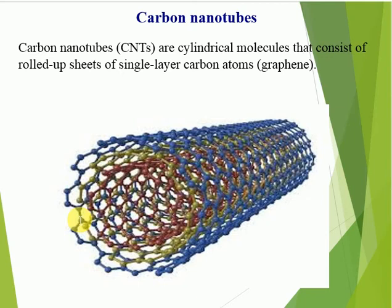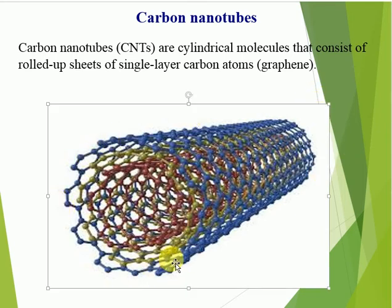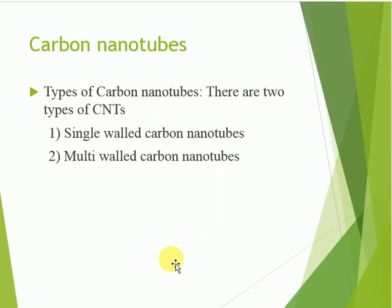The next topic is carbon nanotubes (CNTs). Carbon nanotubes are cylindrical molecules that consist of rolled-up sheets of a single layer of carbon atoms — that is, graphene. Carbon atoms are arranged hexagonally in a cylinder shape. There are two types: first, single-wall carbon nanotubes (SWCNT), which have a single outer wall of carbon; second, multi-wall carbon nanotubes (MWCNT), which contain multiple outer walls of carbon — cylinders inside other cylinders.